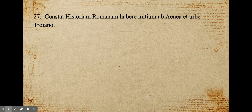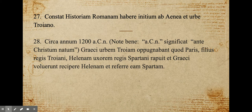Constat Historiam Romanam habere initium ab Aenea et urbe Troiano. It's agreed that Roman history has its beginning from Aeneas and the city of Troy. Around the year 1200 BCE — nota bene, ACN signifies ante Christum natum, before the birth of Christ.